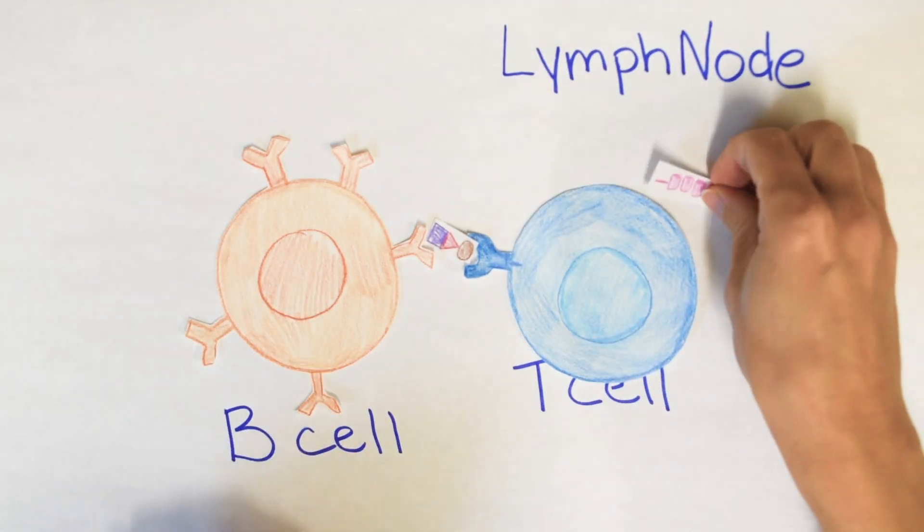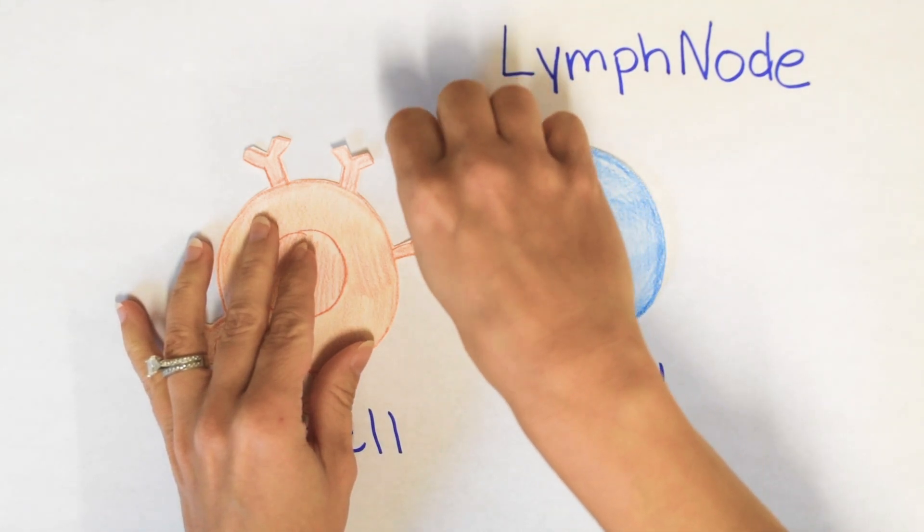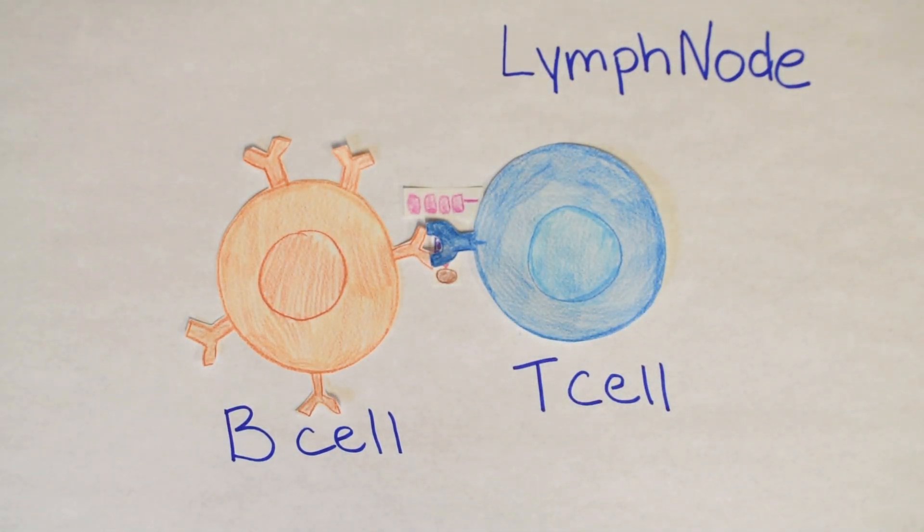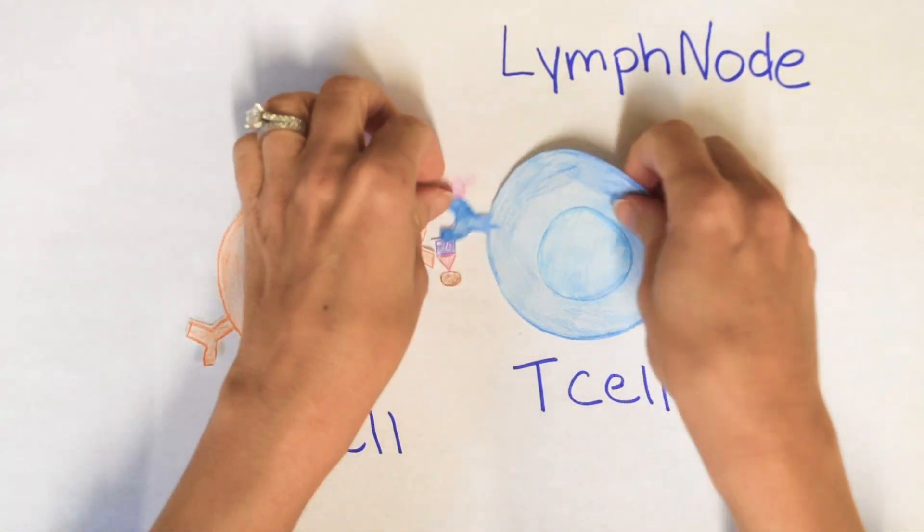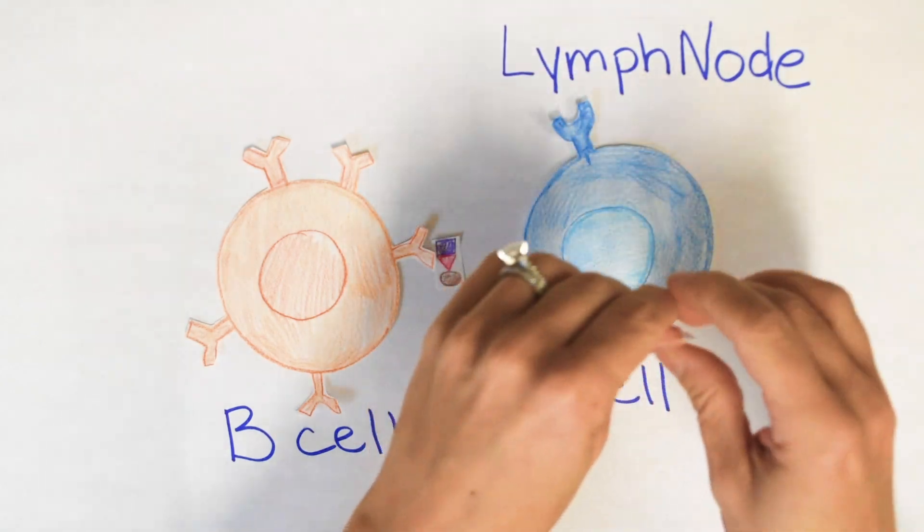Okay, so here we go. They're a match. Again, this would take some period of time to find, because you have millions of different B cells and T cells, but here we go. They're a match. Now the B cell can make antibodies against Campylobacter jejuni.